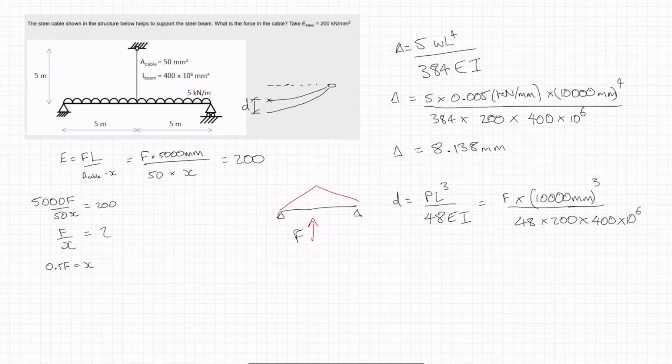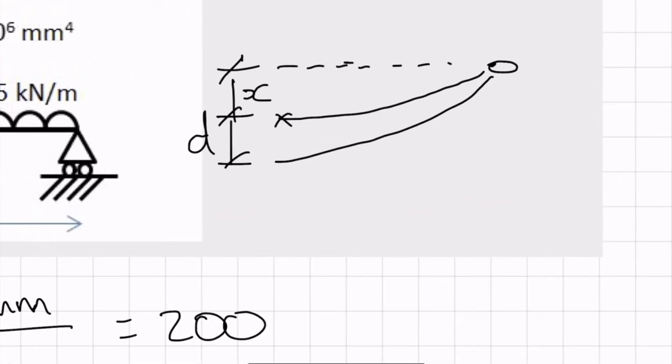So if we calculate that, D is equal to 0.260F. And we want this, we're going to label that there, x.